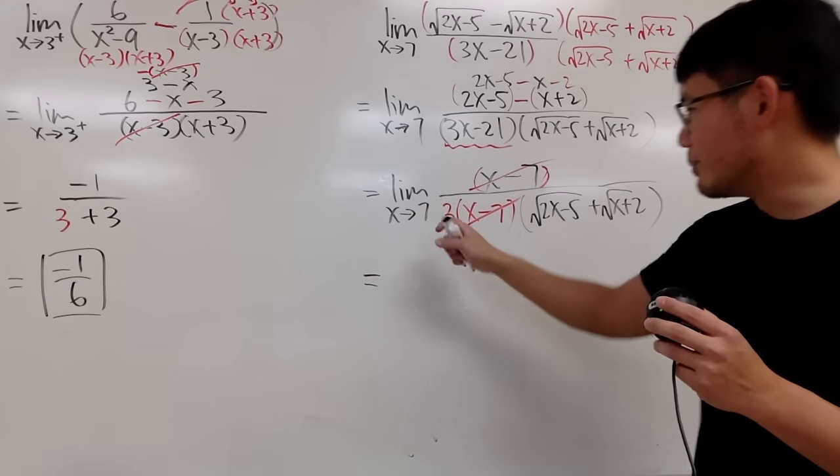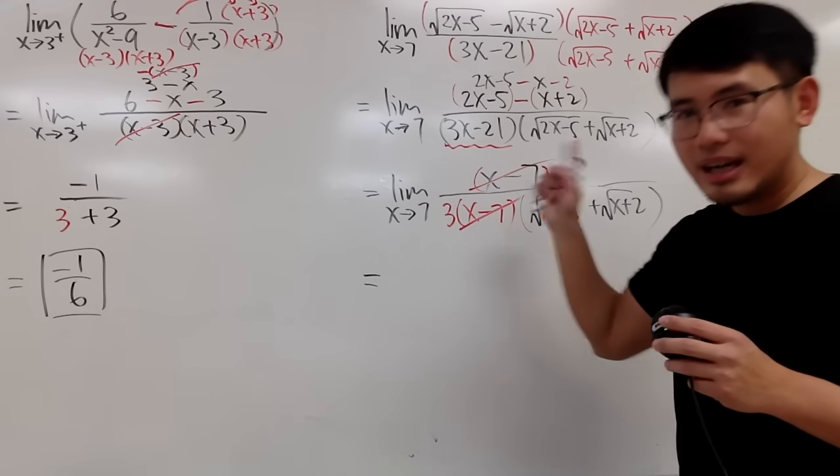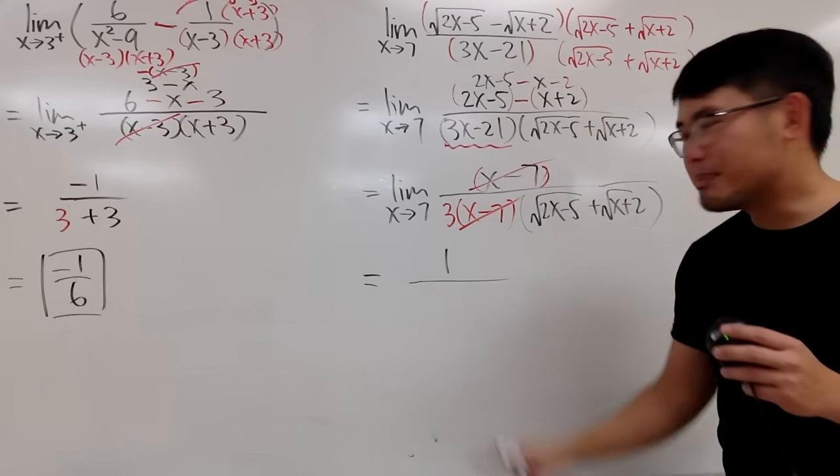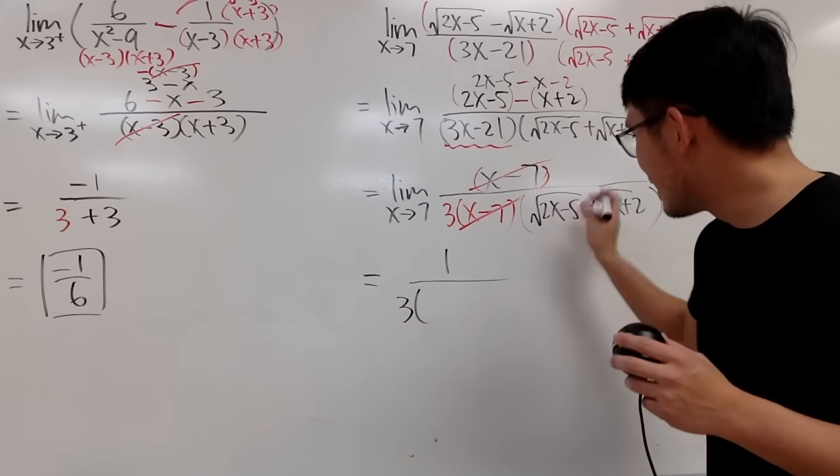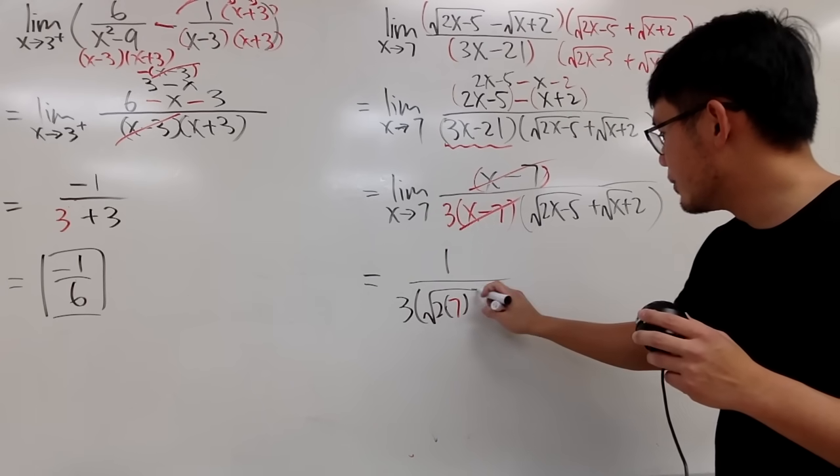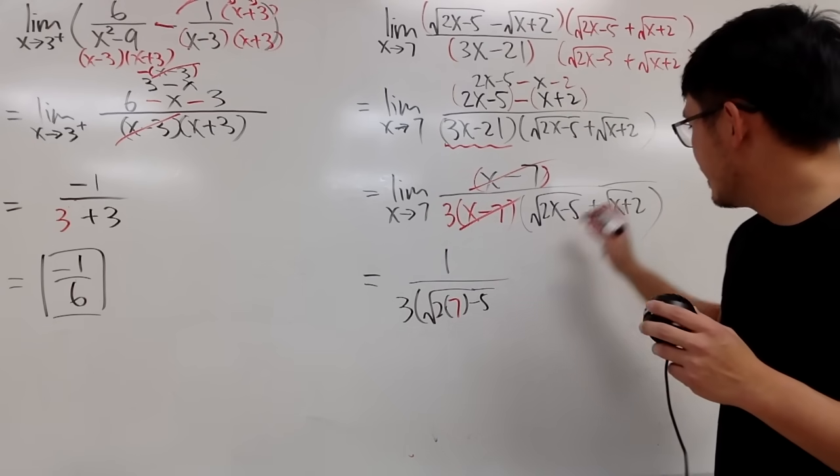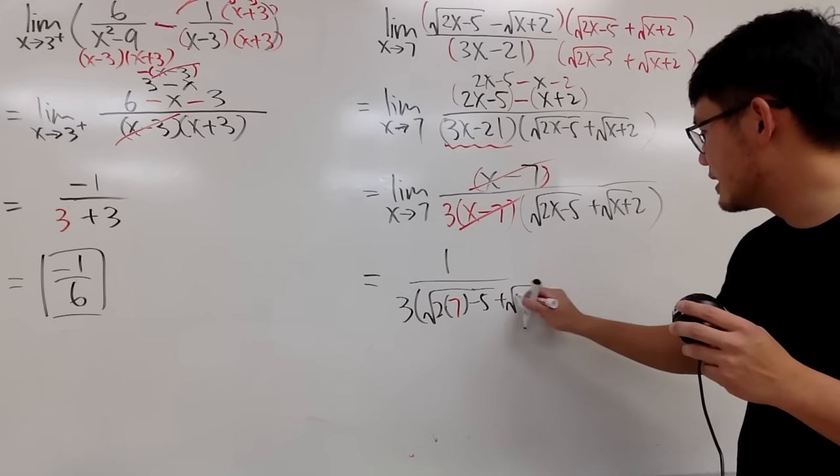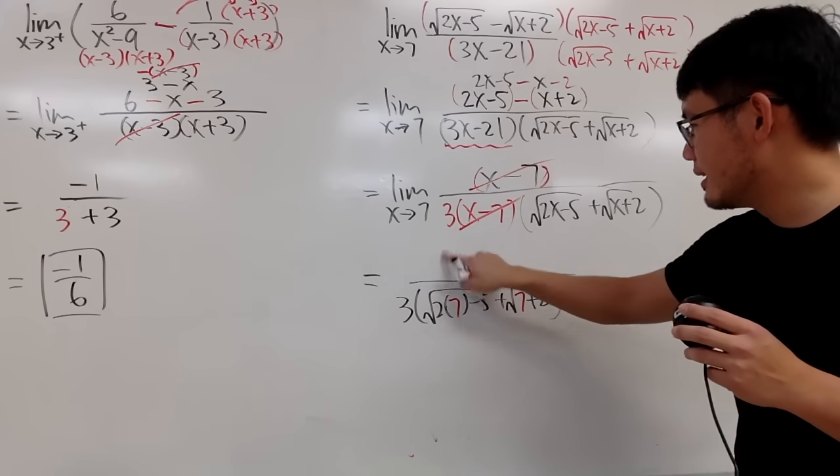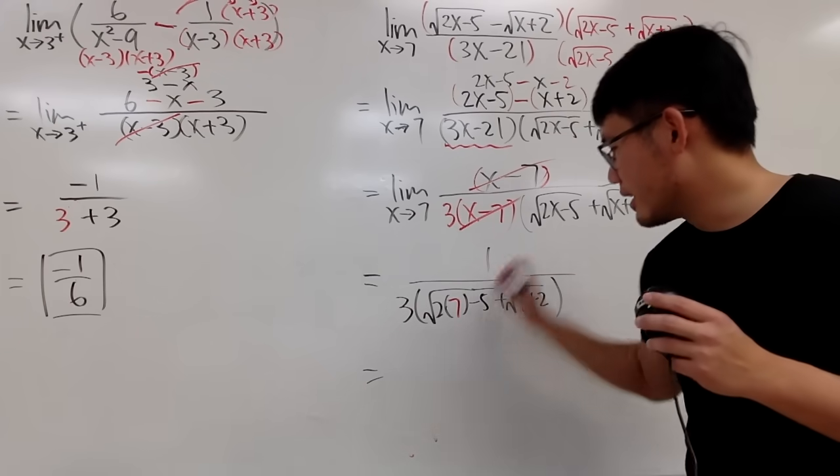In the end, of course, you put 7 into all the x. On the top, we have just a 1. That's a nice 1. On the bottom, you have 3 right here. And you multiply by square root of 2 times 7. And you minus 5. And then, you add square root of 7 plus 2, like this for the bottom. And let's see. On the top is 1. On the bottom is?